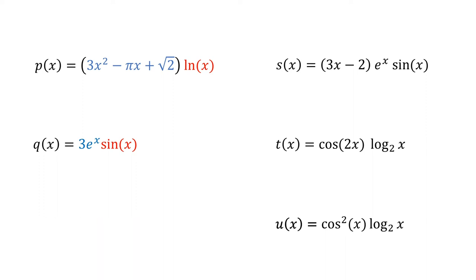Next, let's look at s. You might notice that it is actually made up of three functions that are multiplied together: 3x minus 2, e to the x, and sin. It's possible to use the product rule here if you think of e to the x times sin as a single function. And you know that you can find the derivative of this red function, although it will involve a second application of the product rule.